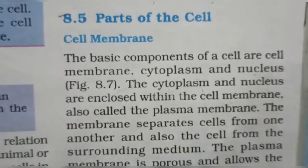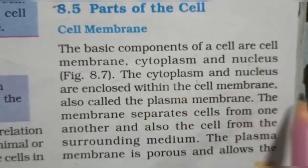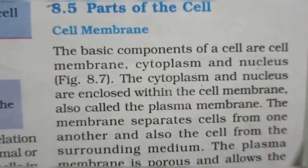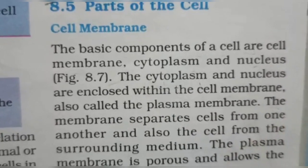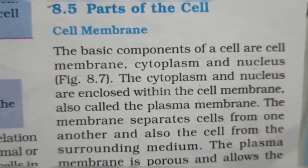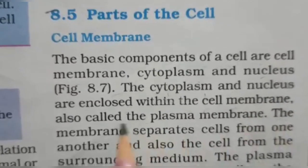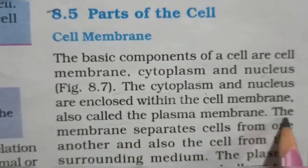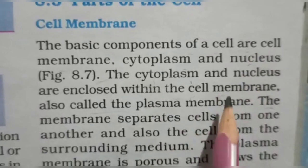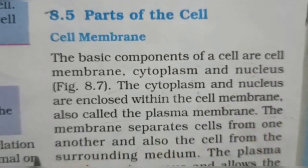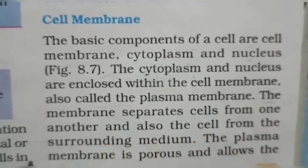So we have cytoplasm, nucleus, and cell membrane. The cell membrane is like our home, and the cytoplasm and nucleus are like little children inside. The cell membrane is also called the plasma membrane. The membrane separates cells from one another and also separates the cell from the surrounding medium.